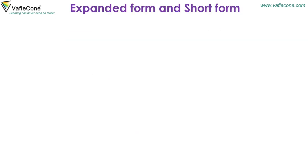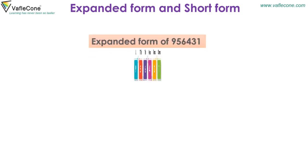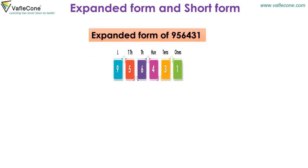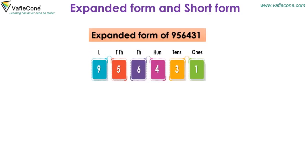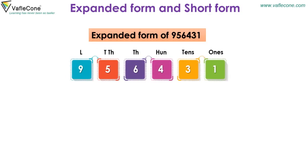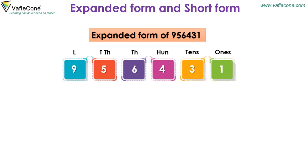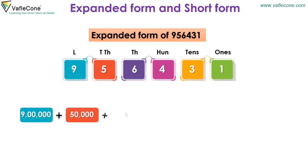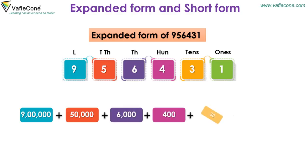Expanded form and short form. The expanded form of 9,56,431 is 9,00,000 + 50,000 + 6,000 + 400 + 30 + 1.